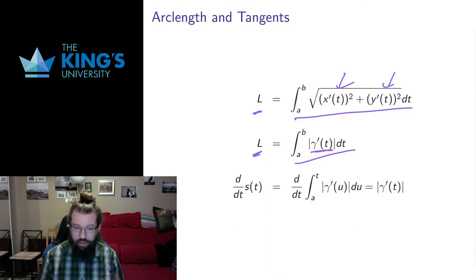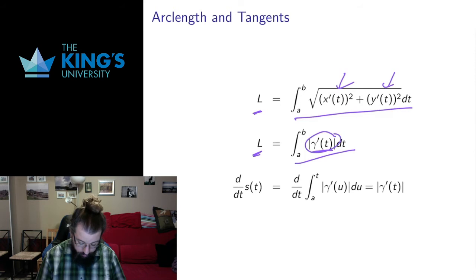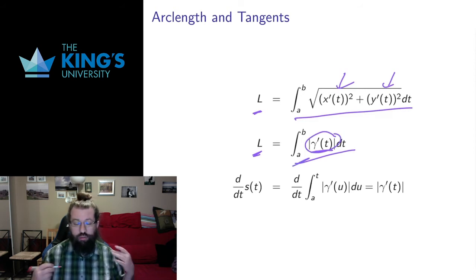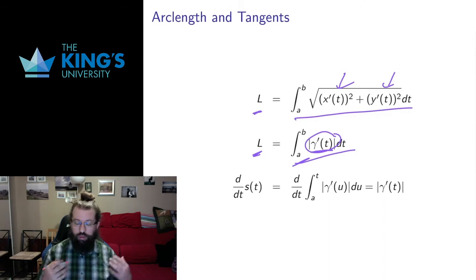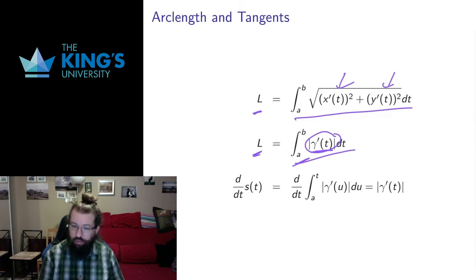The length of the tangent vector is the scalar speed along the curve. And that makes sense — the distance you travel should be the integral of how fast you're traveling. Integrate speed, you get distance. There's a really nice concrete way that this relates back to things we understood in first year single variable calculus: the integral of speed should be distance traveled. Arc length is in fact the integral of speed.